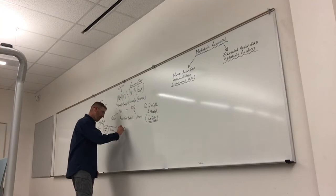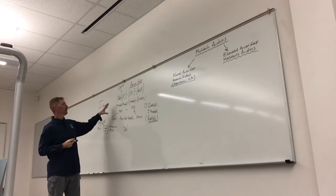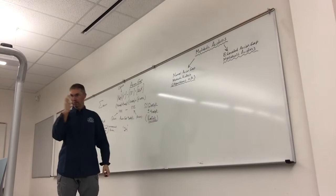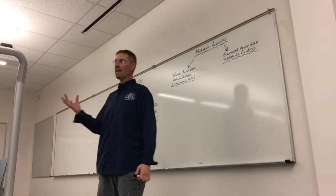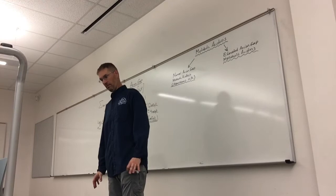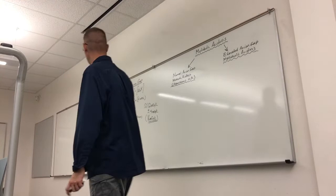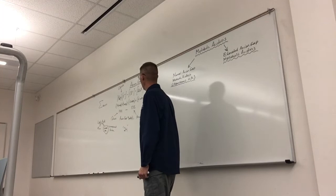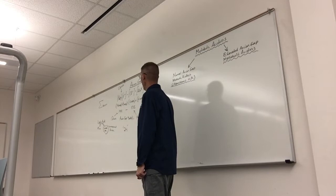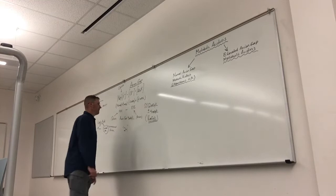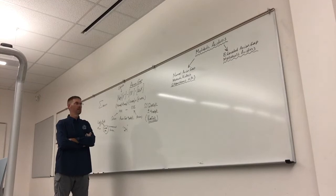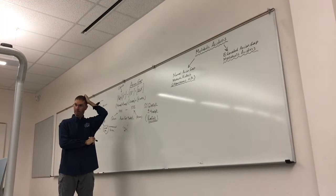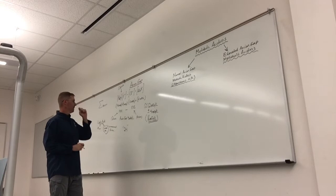If I calculate the anion gap and let's say the anion gap is 24, that means there is a very large difference between the cations and the anions, and there's some mystery meat that needs to account for that difference. Something is adding a bunch of anions into the system. In an elevated anion gap metabolic acidosis, typically your chloride is going to change and get a little lower, and your bicarbonate is going to be really low as well.